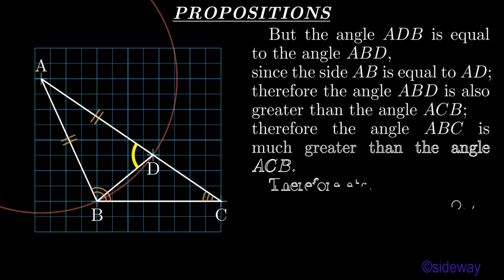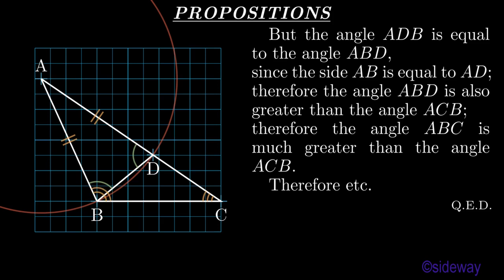But the angle ADB is equal to the angle ABD, since the side AB is equal to AD. Therefore the angle ABD is also greater than the angle ACB. Therefore the angle ABC is much greater than the angle ACB. Therefore, etc. What was to be shown?